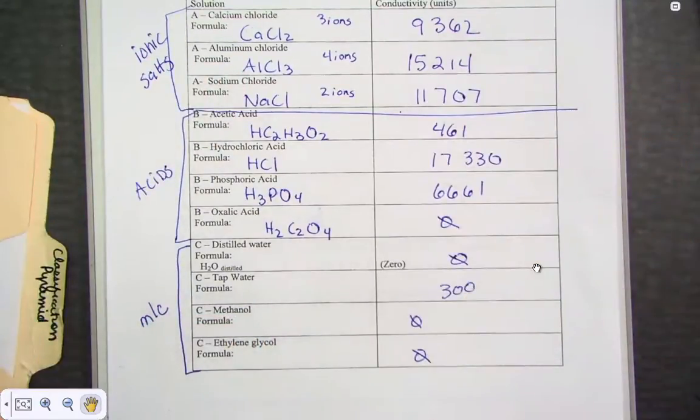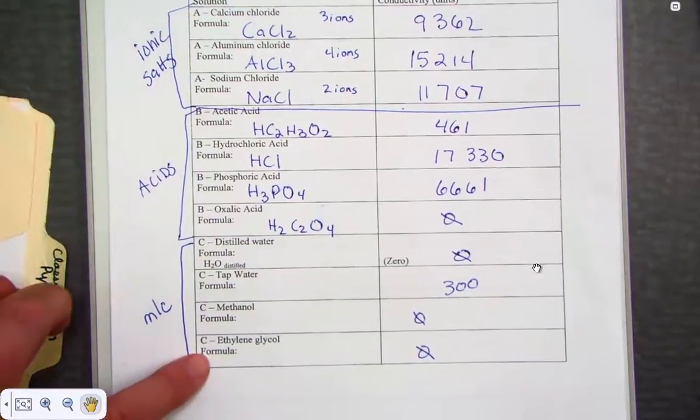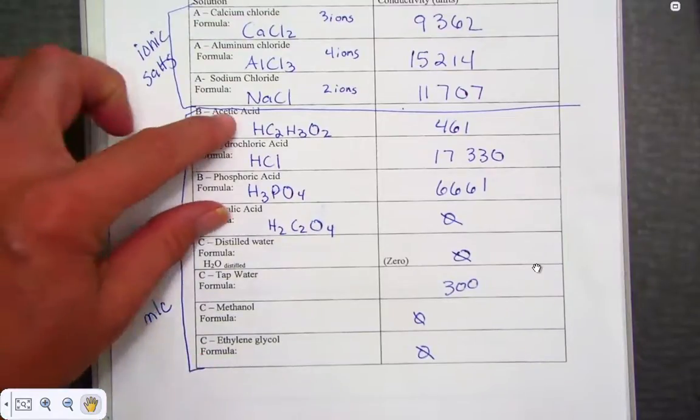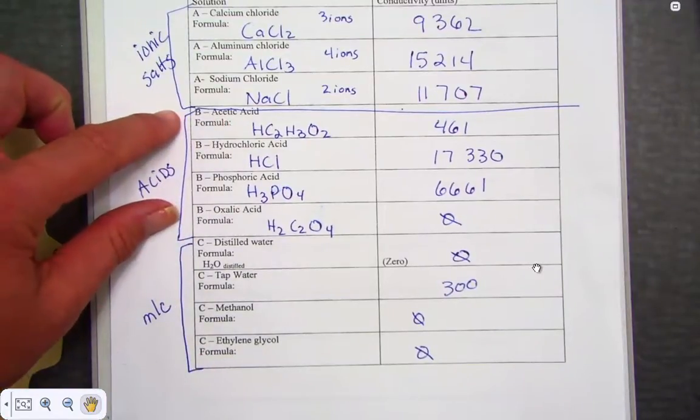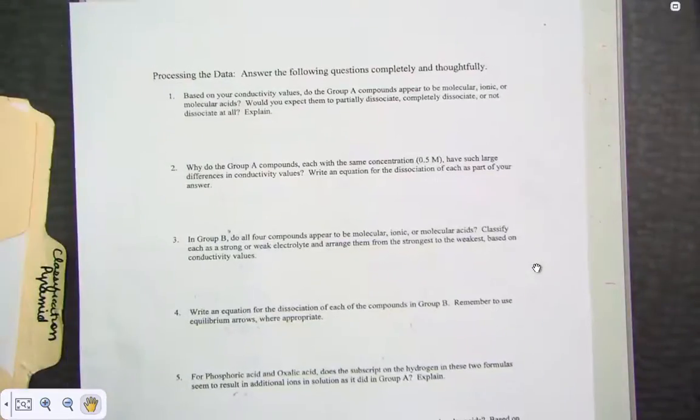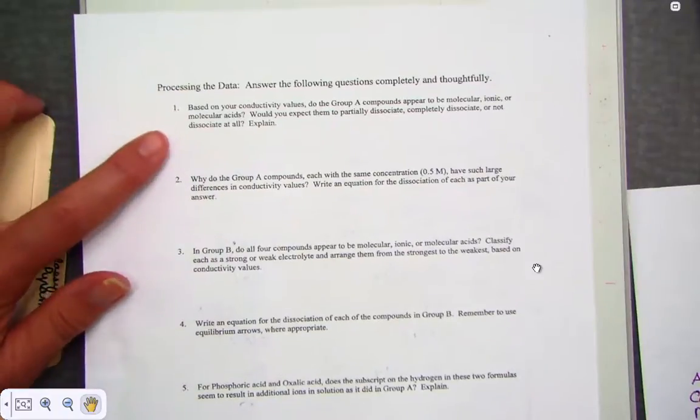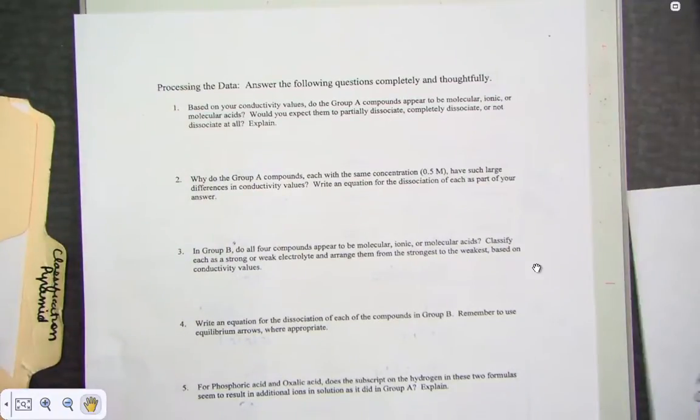So again, just comparing some numbers. Yours don't have to match exactly, but we get an idea that we have these three different categories. Ionic salts, molecular compounds, and in this tweener area, strong and weak acids. Let's take a peek at some of your processing questions I wanted you to be able to check over. Again, I assume that you've done yours and are simply checking.